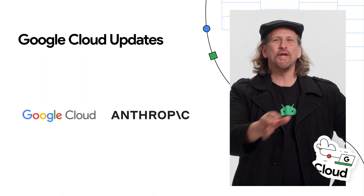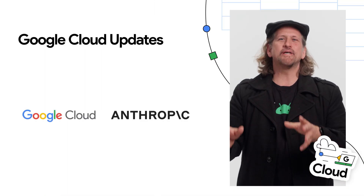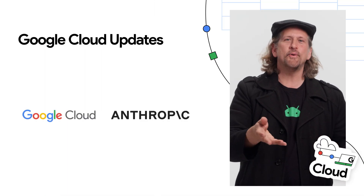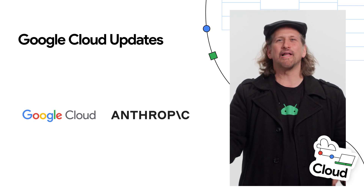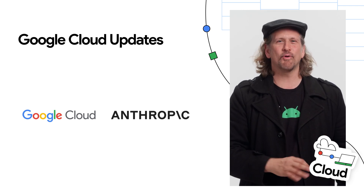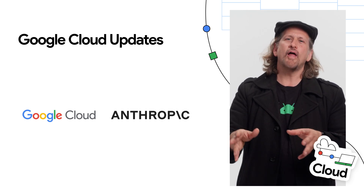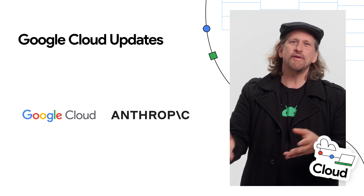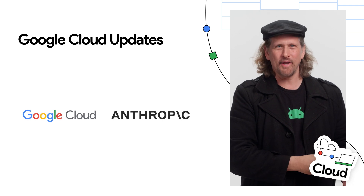Over in Google Cloud, we announced that Anthropic's Claude 3 Sonnet and Claude 3 Haiku models are generally available to all customers on Vertex AI, while Claude 3 Opus will be available on Vertex AI in the coming weeks.